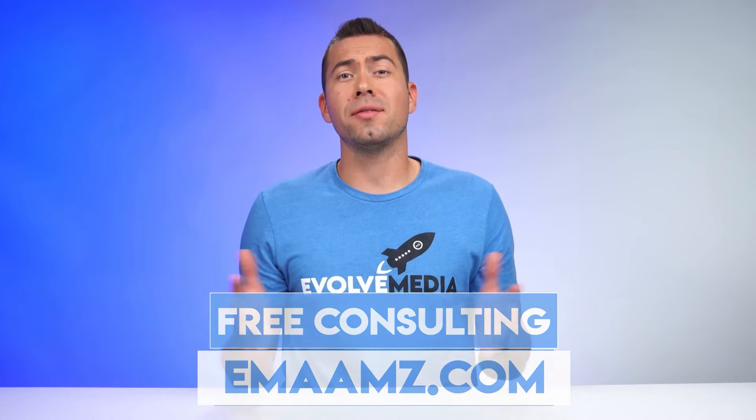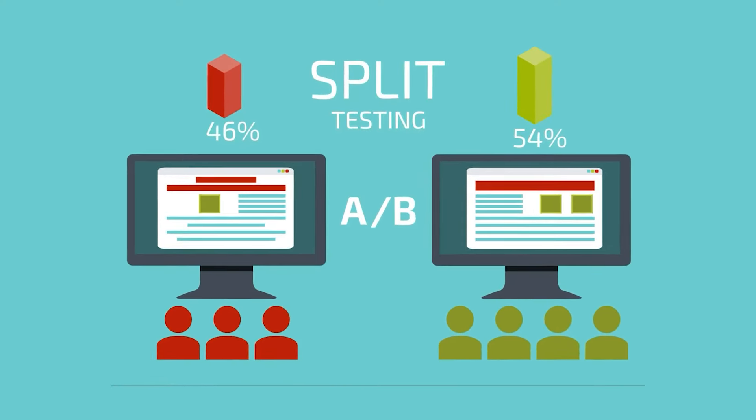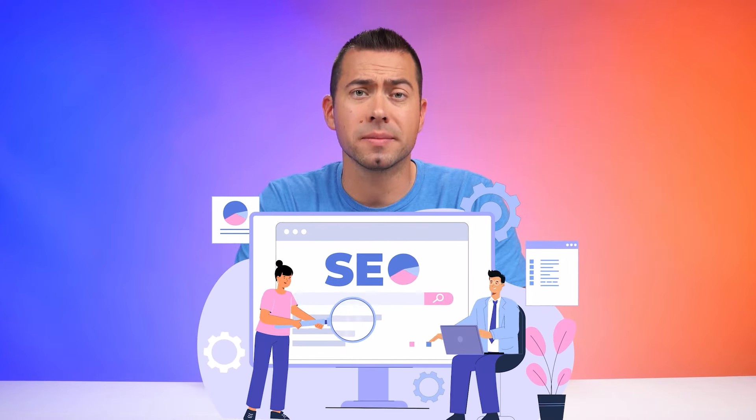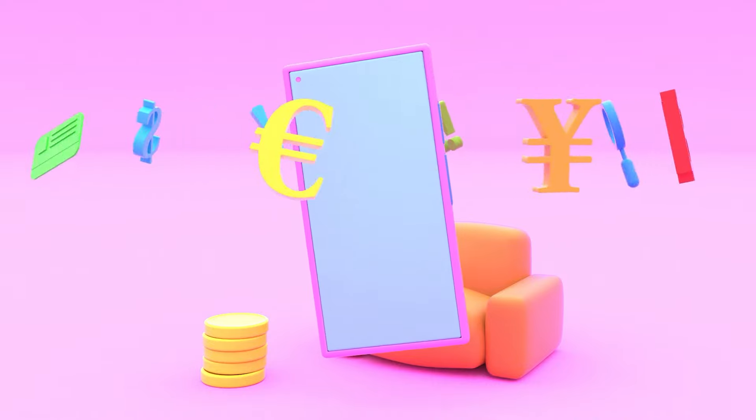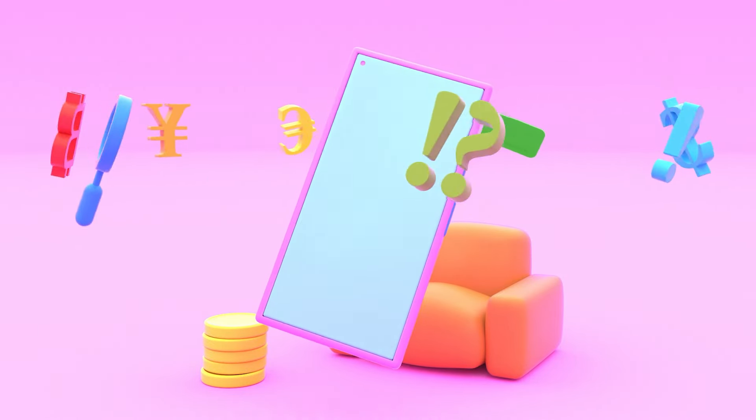As an Amazon seller, capitalizing on split testing product images and videos can yield immense benefits in driving sales, optimizing strategy, and gaining a competitive edge. By systematically testing variations of visual assets and analyzing the data, sellers can decode the ideal visual formula to engage and convert shoppers at scale. Let's dive deeper into the multitude of advantages that strategic split testing unlocks for e-commerce brands on Amazon.